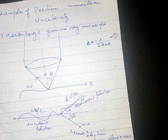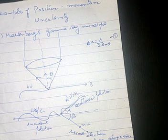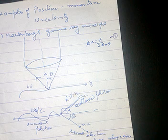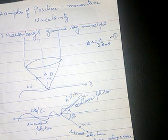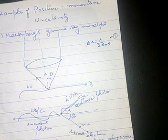To minimize the uncertainty we must use the radiations of shortest wavelength such as gamma rays. But the use of gamma rays involves the Compton effect where the electron experiences recoil. In order to observe where the electron is, one of the incident photons must strike the electron and go into the microscope.